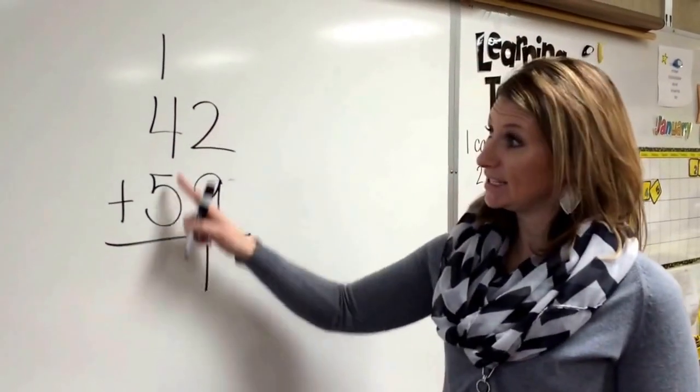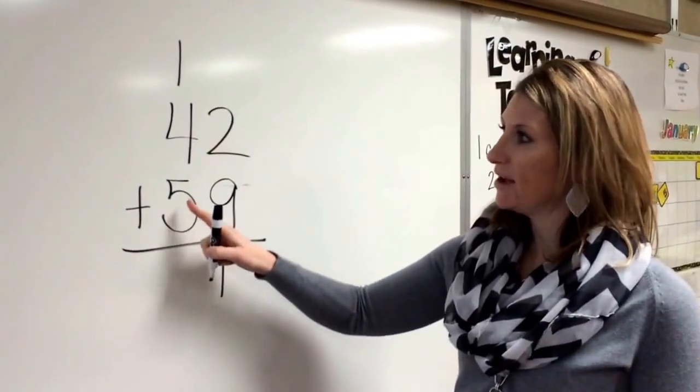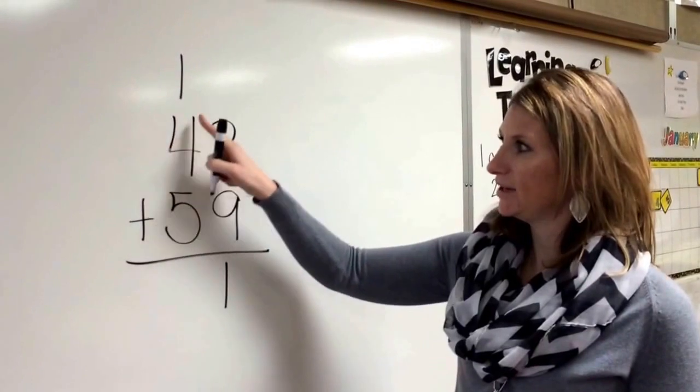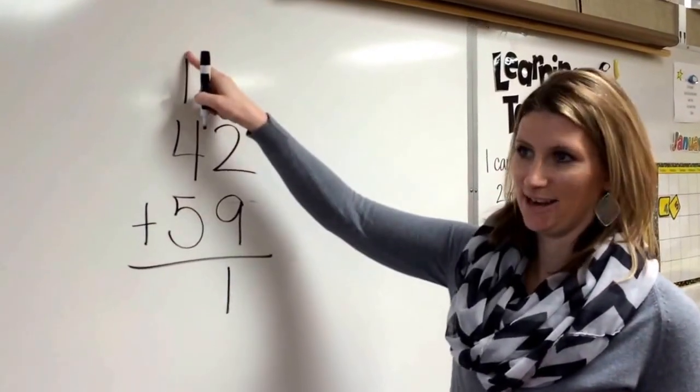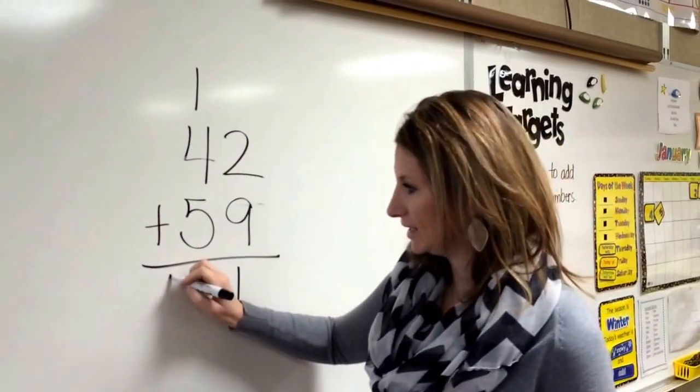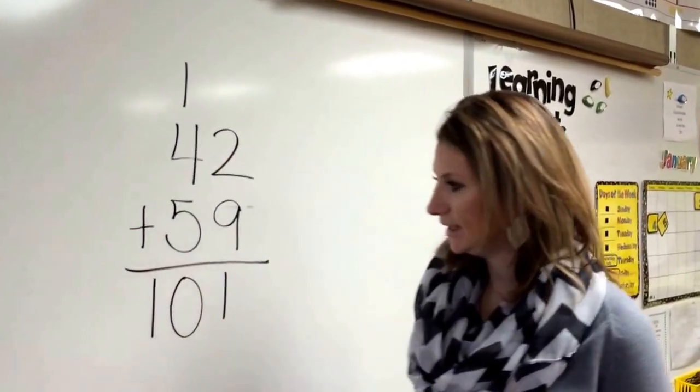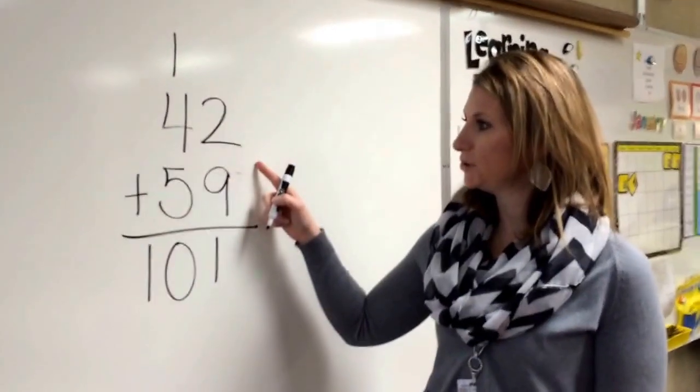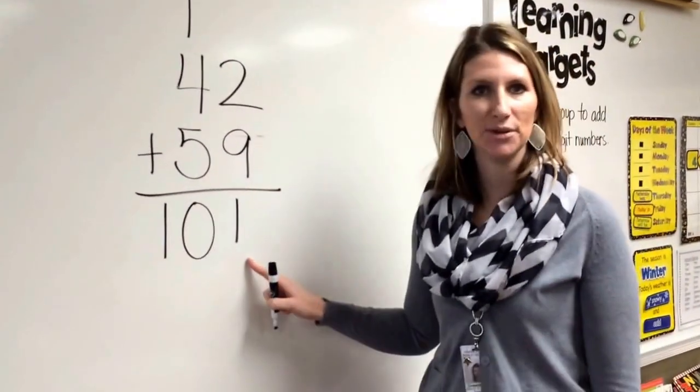So now I have to add my tens column. I add all three numbers: five, six, seven, eight, nine, ten. Since I have nothing over here in this column in the hundreds, I can write my entire number ten here. So 42 plus 59 equals 101.